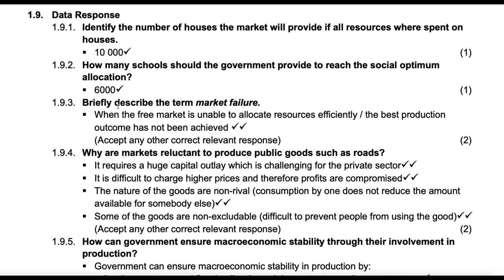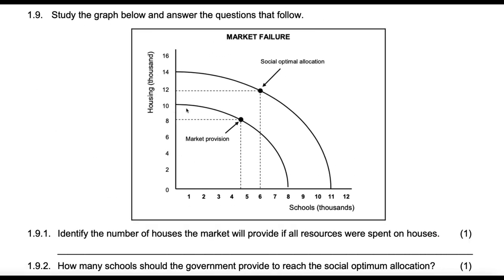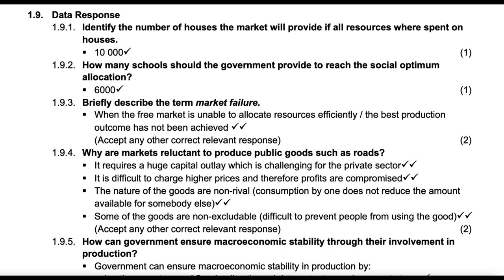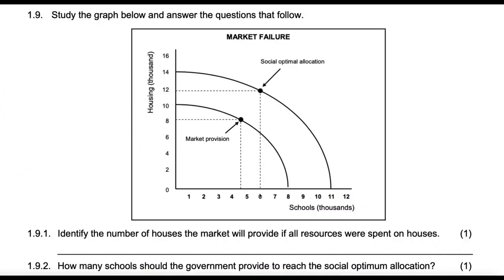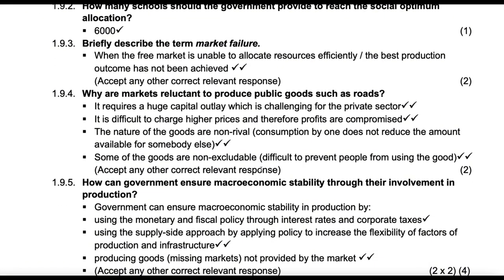Looking at the model answers: 10,000 houses — that was correct. For schools at social optimum, it's 6,000. Market failure: 'a free market is unable to allocate resources efficiently' or 'the best production outcome has not been achieved.' My favorite definition is: failure of markets to allocate resources at an optimum level.